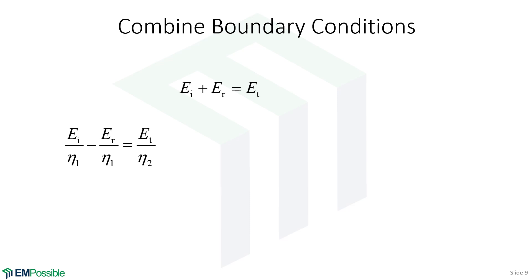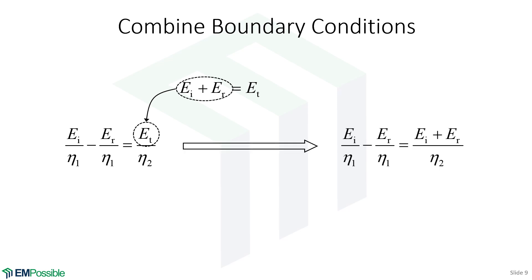At this point, we want to combine our boundary condition equations into one single equation. We have our equation from the magnetic field boundary conditions and our equation from the electric field boundary conditions. We have an expression to replace the amplitude of the transmitted electric field with the incident and reflected electric field amplitudes, and so we can get a single equation just containing the amplitudes of the incident and reflected waves. It's from that equation that we will derive our reflection coefficient.